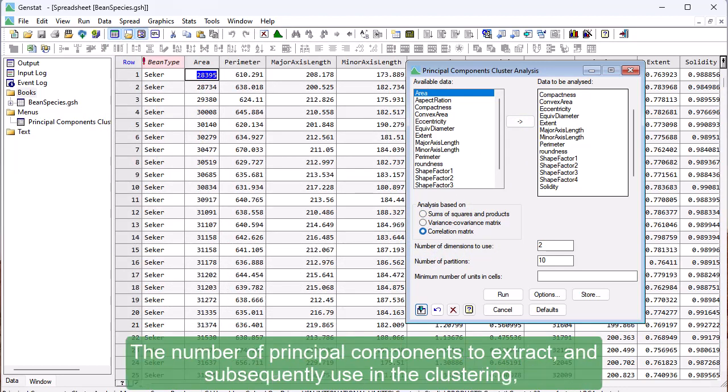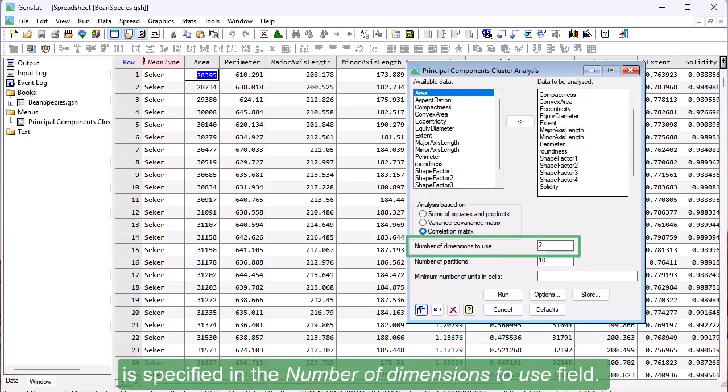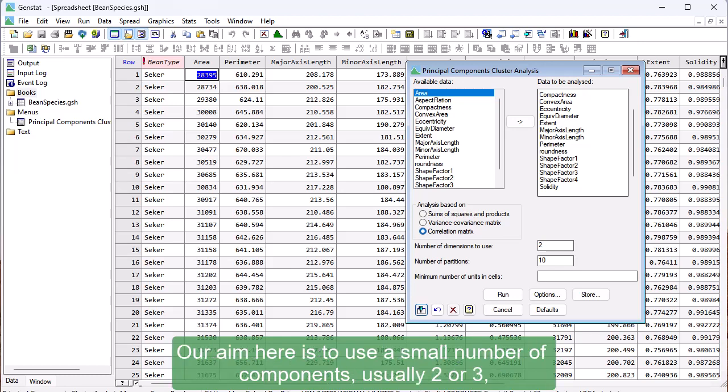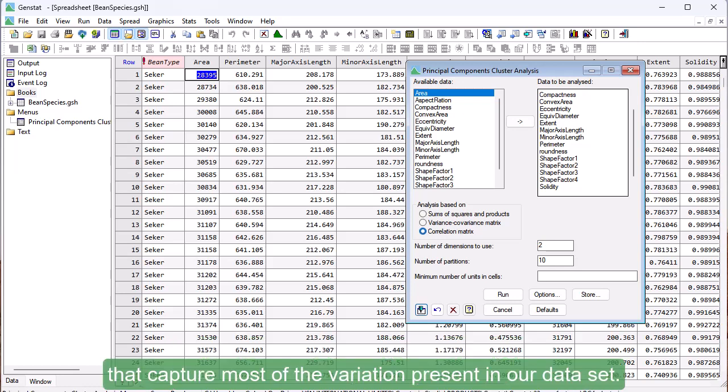The number of Principal Components to extract and subsequently use in the clustering is specified in the number of dimensions to use field. We need to extract at least two Principal Components but no more than six. Our aim here is to use a small number of components, usually two or three, that capture most of the variation present in our dataset.